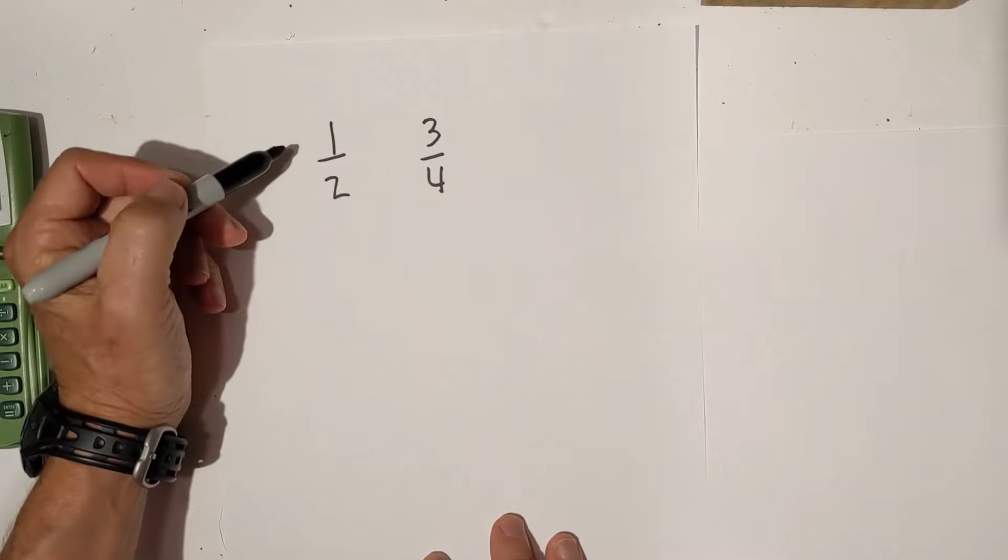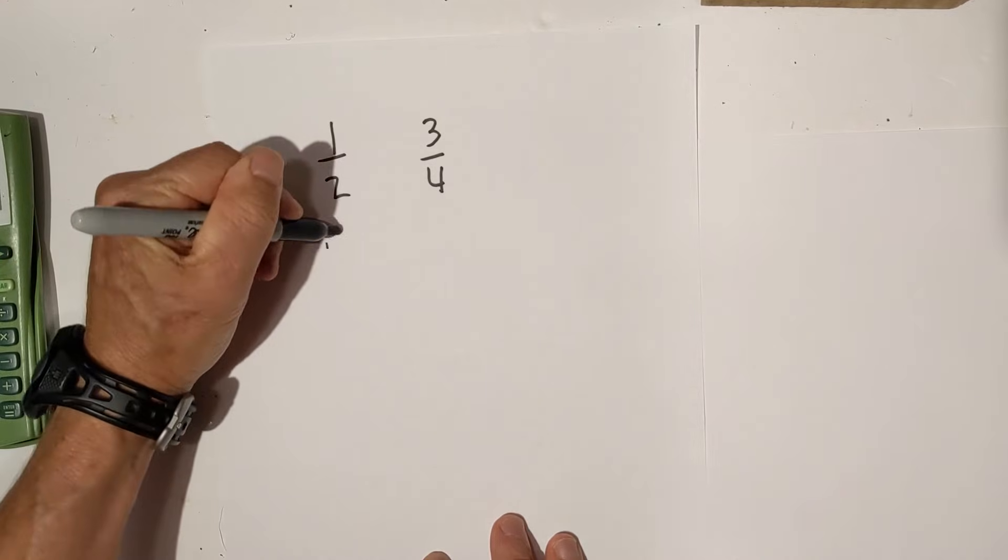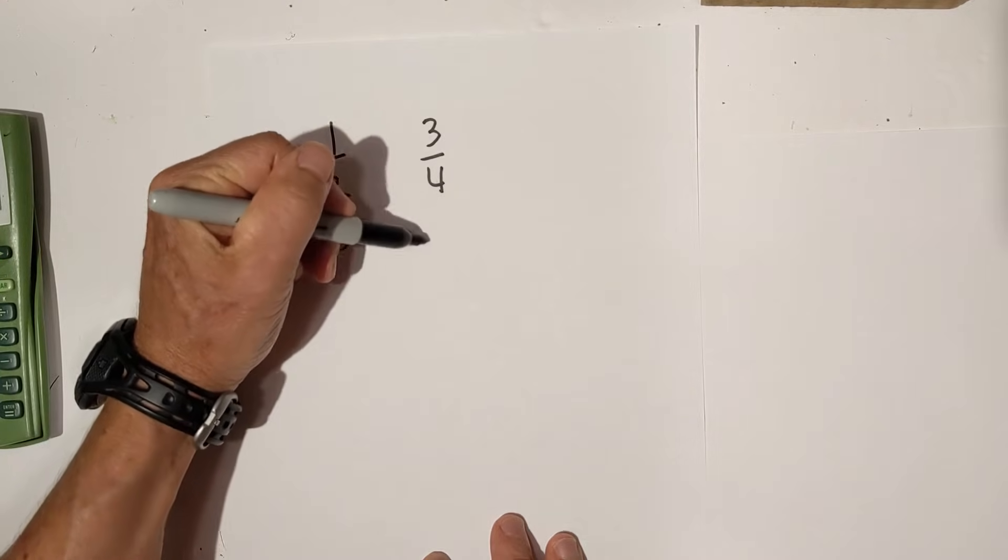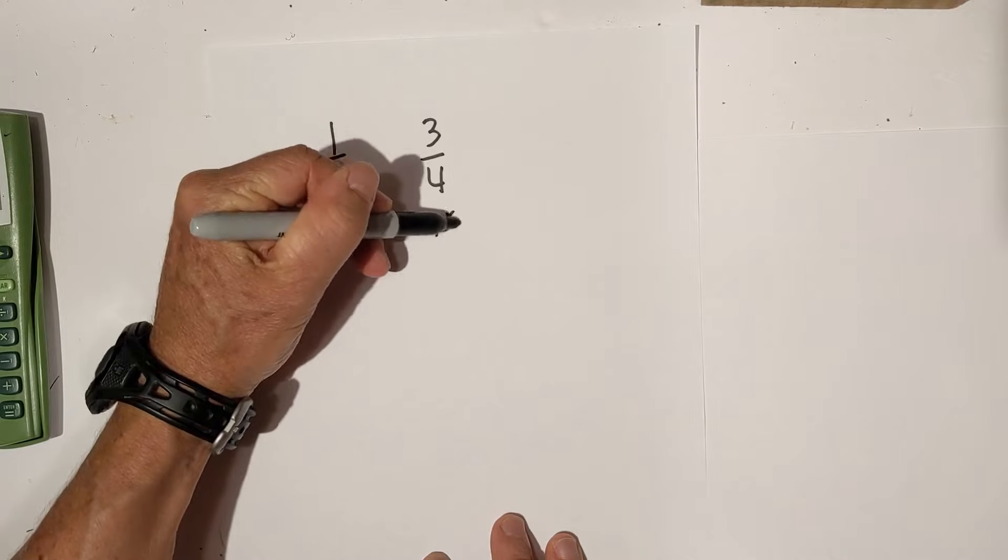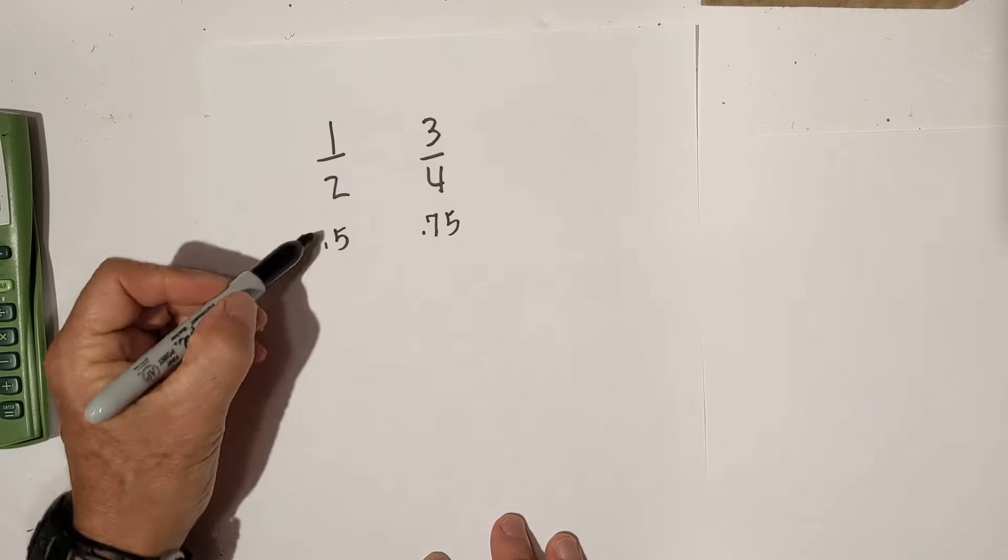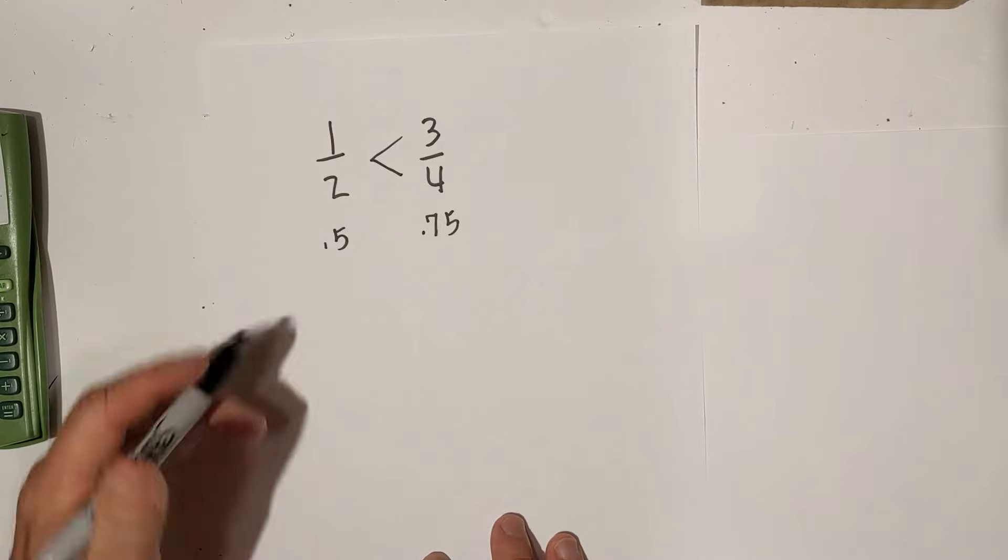The first is you can convert it to a decimal. I know 1 divided by 2 is 0.5 and 3 divided by 4 is 0.75. So therefore, 0.75 is larger than 0.5. That's one technique.